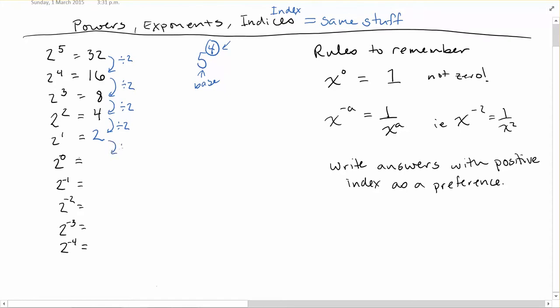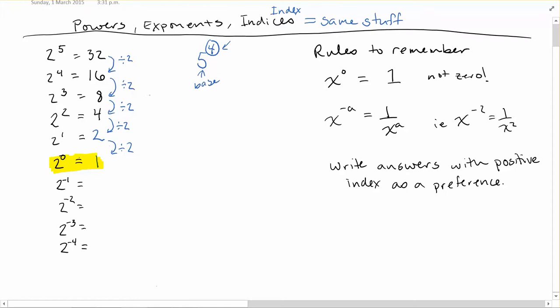Let's keep going — divide by 2 again. 2 divided by 2 is 1. Some people might be surprised to find out that 2 to the power of 0 is not 0, but it is 1. We can see that happens because of this pattern of dividing — or multiplying if we were going upwards. Going up, we times by 2; going down, we divide by 2.